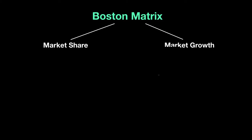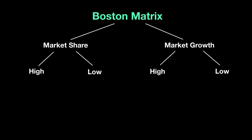Market growth asks: what is the potential of that product? Are more and more people buying it? The Boston Matrix further divides these two factors into two categories each. Market share for any product could be high or low, and similarly, market growth could be high or low. That gives us four possible combinations, which we use to develop the matrix.